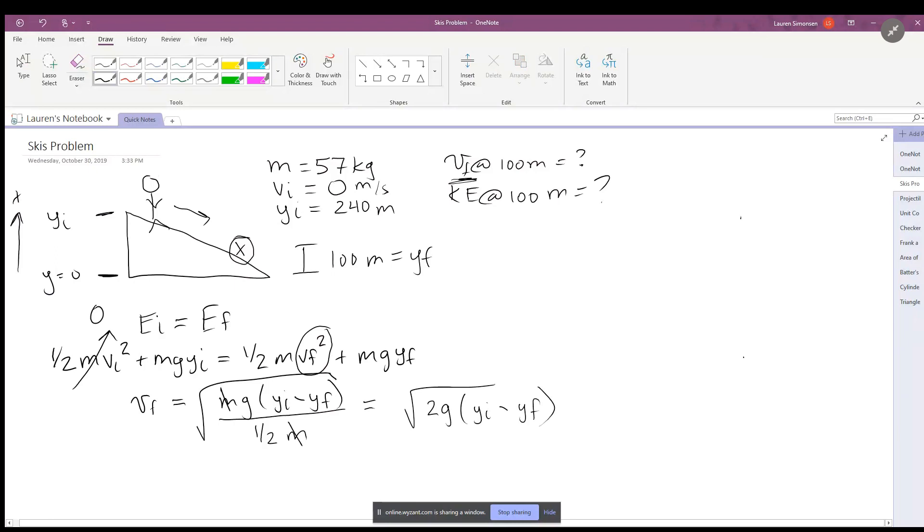We know all of these quantities; we can plug those in. Remember, g is 9.8 meters per second squared, and remember this is not a vector quantity, this is a scalar quantity, so it does not have a direction—it's just the number. And then we multiply by y initial, which is 240, minus y final, which was 100 meters.